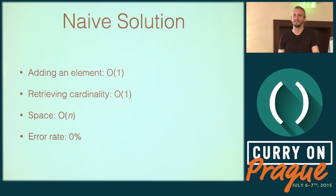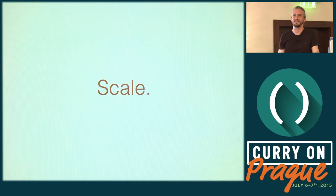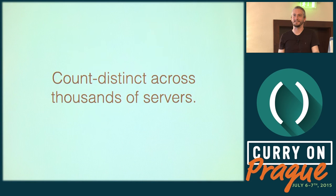For that naive solution, adding an element is an amortized constant-time operation, and finding the length is constant time. The space, however, grows linearly with the number of entries you add. The difficulties with count distinct come with scale — it's easy and cheap to count a thousand or a million unique users, IPs, or URLs, but how about a hundred million per server across thousands of servers? Let's make that the problem: perform count distinct across a thousand servers, each with as many as a hundred million unique items, and find the cardinality of the union. That's distributed count distinct.